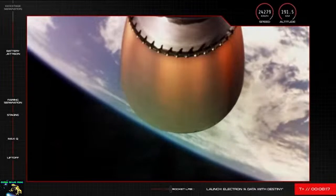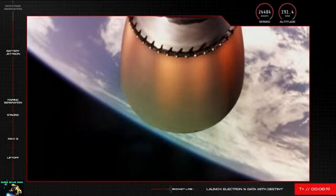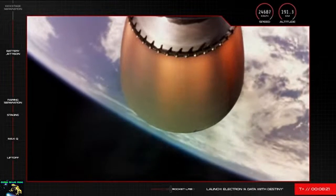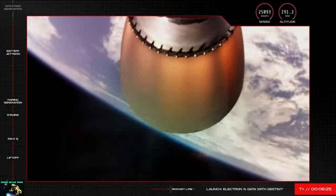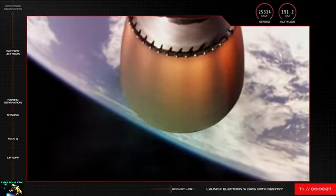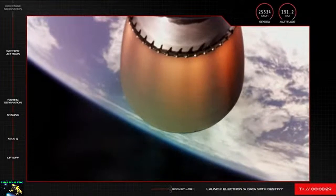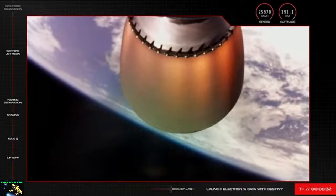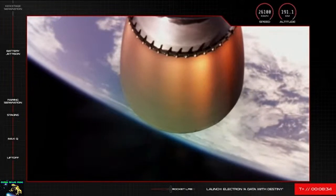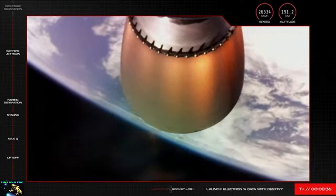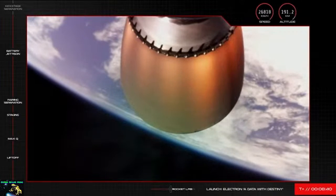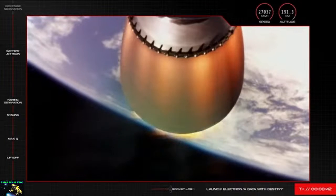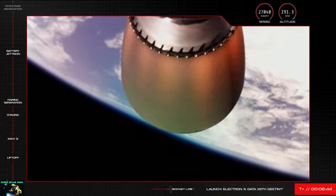A check-in on the telemetry in the top right of your screen and you'll see Electron is continuing on its way to orbit traveling at a speed of nearly 25,000 kilometers an hour and an altitude of over 190. Now as I mentioned before, coming up next is second engine cutoff or SECO, which will see the engine on Electron's second stage power down ahead of kick stage separation scheduled a few seconds after. SECO confirmed.